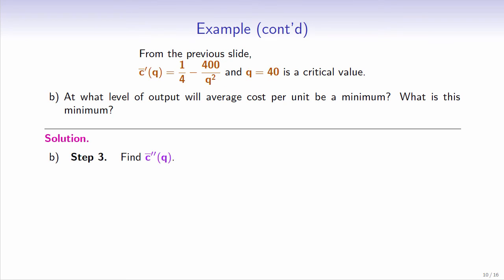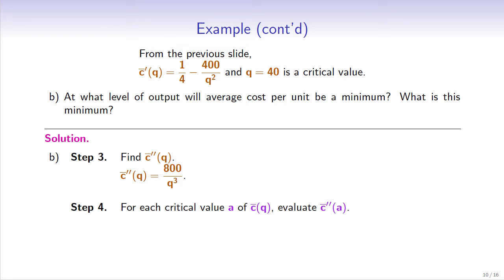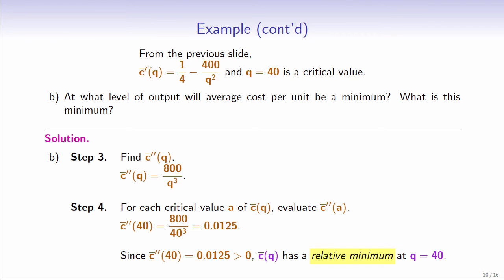Step 3: find the second derivative. The second derivative is 800 over q cubed. Step 4: evaluate the second derivative at each critical value. When q equals 40, the second derivative is 800 over 40 cubed, which equals 0.0125. Since this number is positive, average cost has a relative minimum at q equals 40.